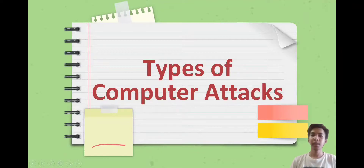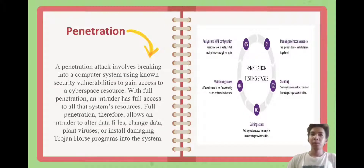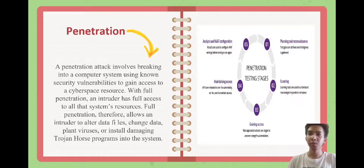My name is Giovanni Moreno and I will discuss the two types of computer system attacks. Number one, we have penetration. A penetration attack is breaking into a computer system to gather vulnerable access or information. With a full penetration attack, the intruder can break into your computer system and gain access to alter files, change data, implant viruses, and install a Trojan horse program that can control or remotely access your computer system.